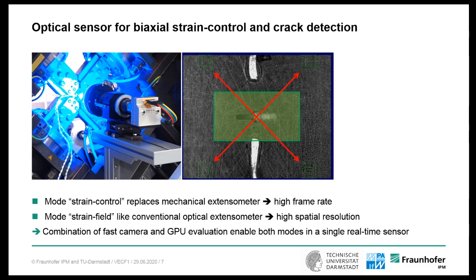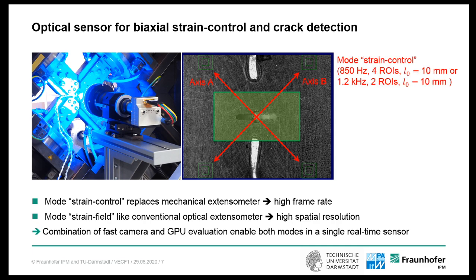The left image shows the DIC system in front of the bi-axial testing site. The DIC system basically consists of a fast CoaXPress camera, a telecentric lens, and a blue LED illumination. On the right side, you see the camera image. In the center, there is the starting notch for the crack, and at the corners, there are four regions of interest, which are in the same position as the tips of the mechanical extensometer. In strain control mode, the strain along axis A and B is measured between these ROIs. Depending on the field of view, we achieve measurement rates between 850 Hz and 1.2 kHz. For crack growth investigations, we use the strain field in the green area in the center.